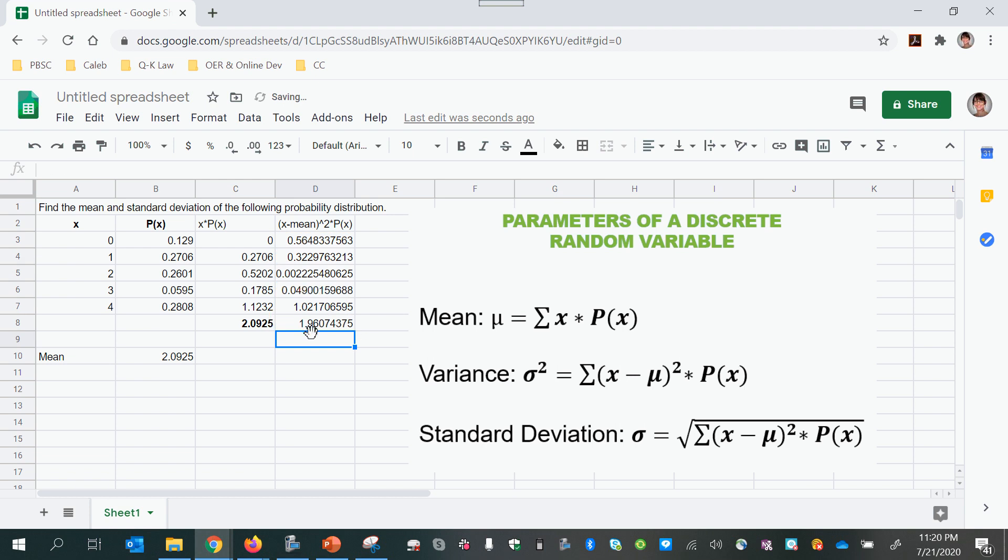Then I'll drag that formula down and add it up. Now notice that I typed the sum function in again, but I also could have just dragged this summation because this was summing this column. I can drag that to the side there. All right, so there's my variance.